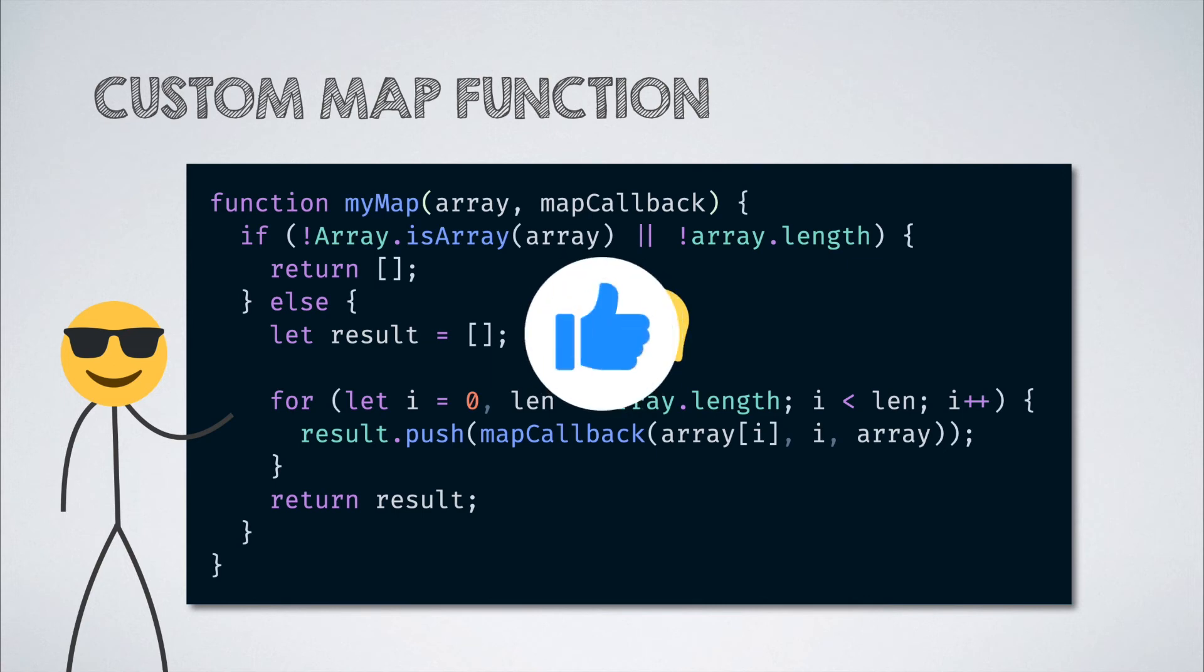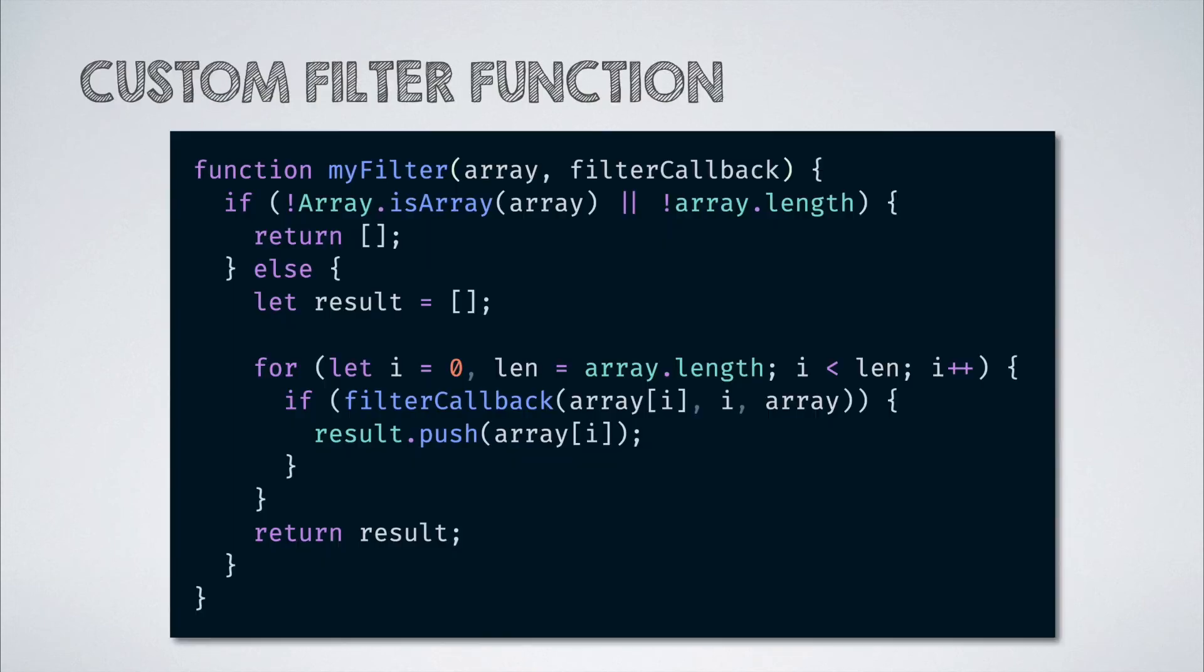Now, let us look at the implementation of the filter method. The only difference between this and the map implementation is that before adding the item to the result array, we check whether the callback function returns true when called with that item and then we push it to the result array. That tiny change makes the function behave as a filter function.